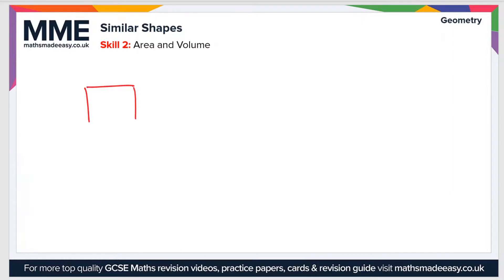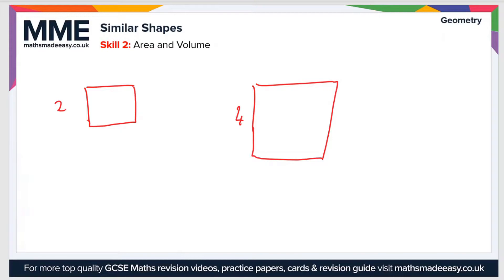So if I draw two similar shapes here — I'm going to use squares because it's nice and easy. These two shapes are mathematically similar, so the one on the right is just the scaled up version of the one on the left. If I pick two random lengths, say 2 and 4 centimetres, then the scale factor will be 4 divided by 2. We can work out the length of any of the sides on the bigger shape by knowing the scale factor and the corresponding length on the smaller shape. So the scale factor is 2.